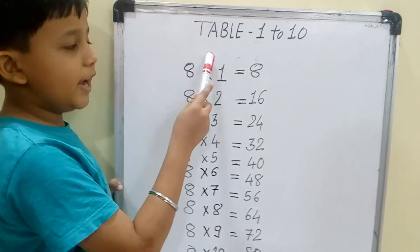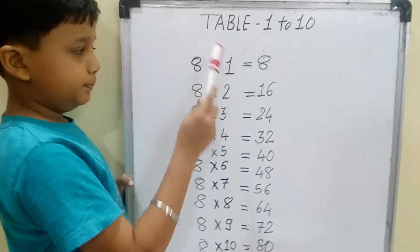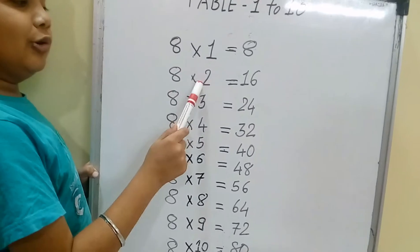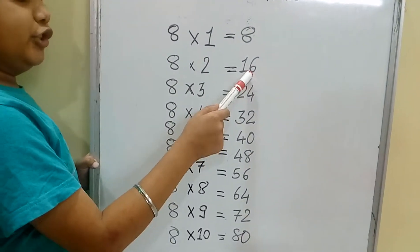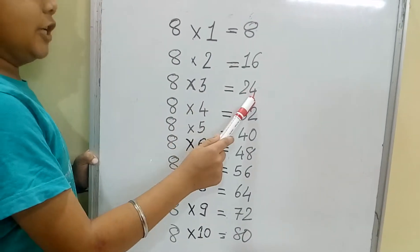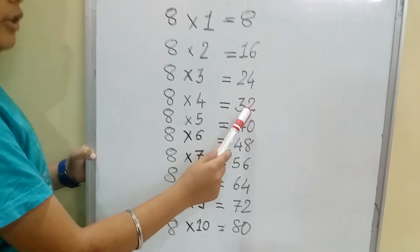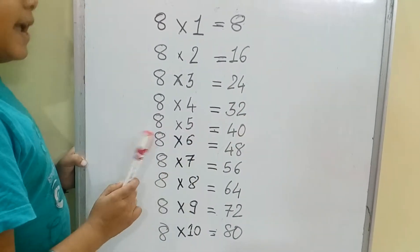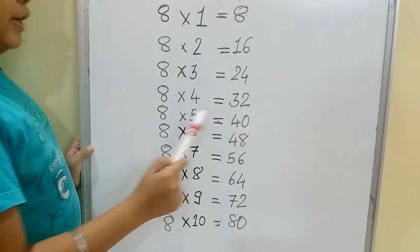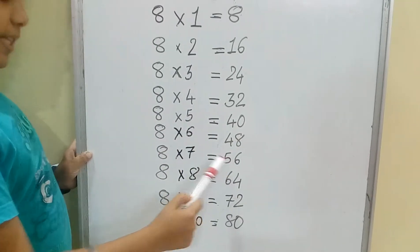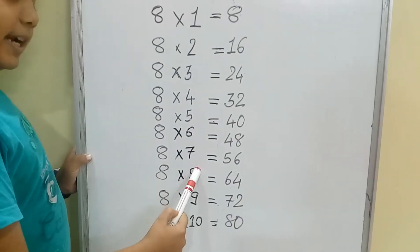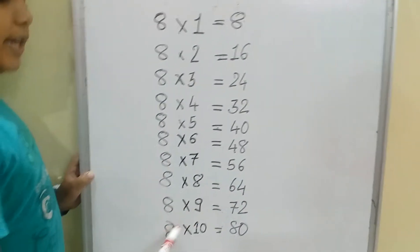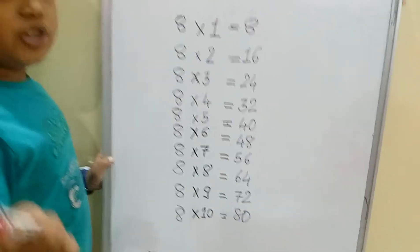Now we are learning the table of 8. 8 one is 8, 8 two is 16, 8 three is 24, 8 four is 32, 8 five is 40, 8 six is 48, 8 seven is 56, 8 eight is 64, 8 nine is 72, 8 ten is 80.